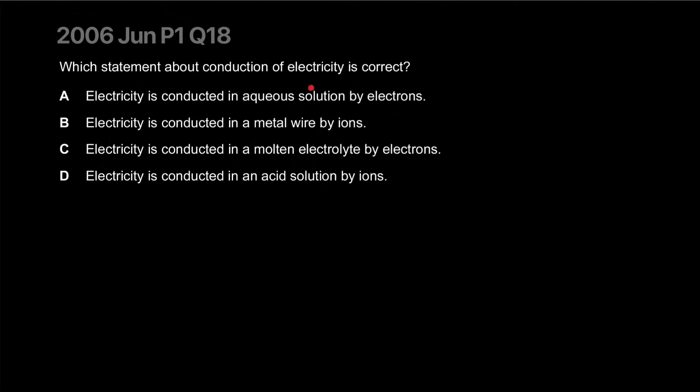A statement about conduction of electricity is correct. Electricity is conducted in a solution by electrons? No, by ions. Electricity is conducted in a metal wire by electrons. Electricity is conducted in a molten electrolyte by ions. The answer is D.